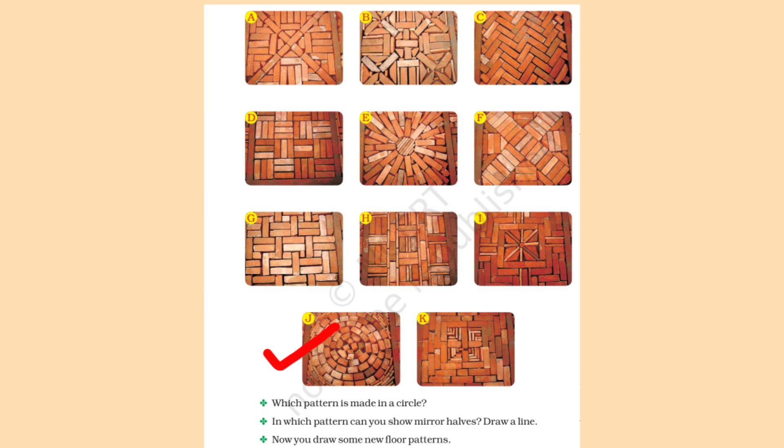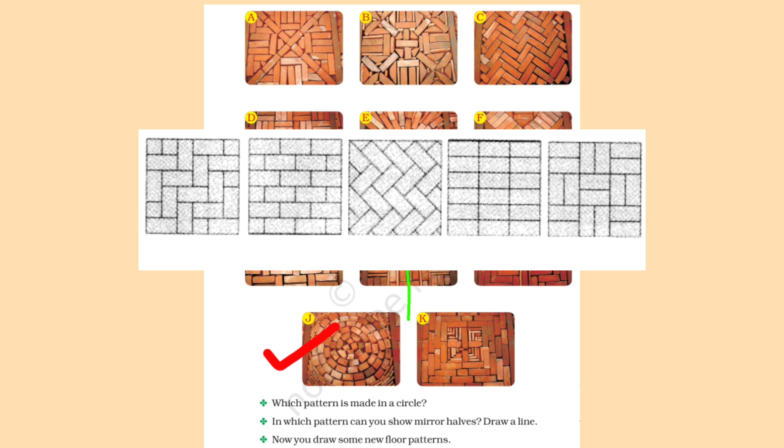The next question is: which pattern shows a mirror half? Mirror half means if you divide the image into two, both sides should have the same image with no change. Pattern H has the mirror half. Now draw some new floor patterns — I will show an example so you can also practice drawing floor patterns.